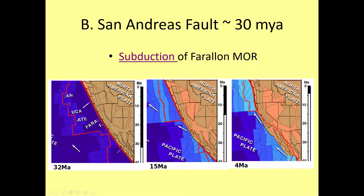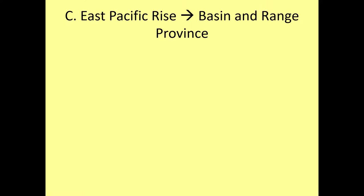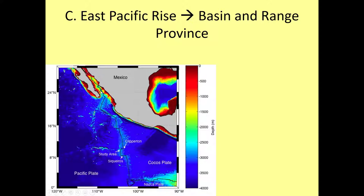Down here is where you have the Cocos Plate. That's how the San Andreas Fault formed from the subduction of mid-ocean ridge of an ancient plate called the Farallon Plate. If we look further south into Mexico, we see this region called the East Pacific Rise. Here's the Cocos Plate — again a remnant of the Farallon Plate — and this mid-ocean ridge system goes down through the Gulf of California, creating a region called the Basin and Range Province.